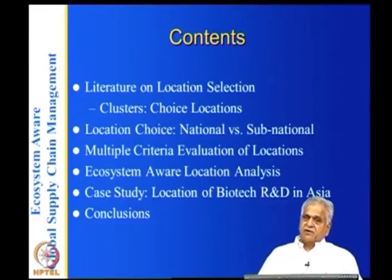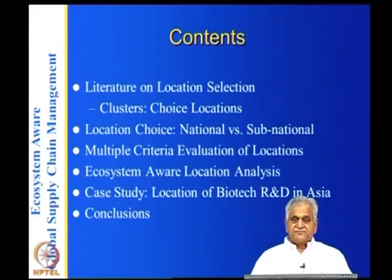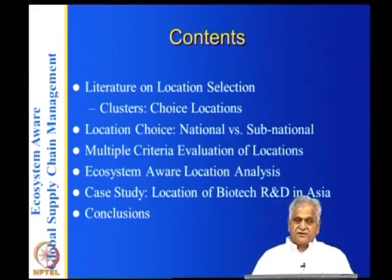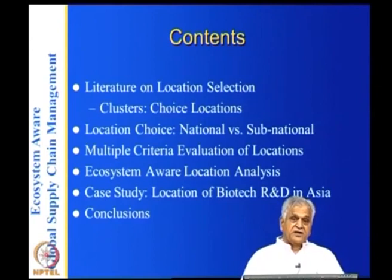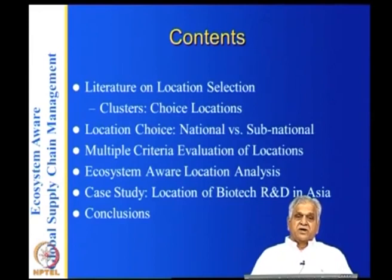There are multiple criteria for evaluation of location. Following the supply chain ecosystem, you need human resources close by, power and water, industrial resources like clusters and agglomeration, government and social group approval, and delivery logistics and IT infrastructure. So it is not a single cost optimization; you have to locate a place depending on multiple criteria.